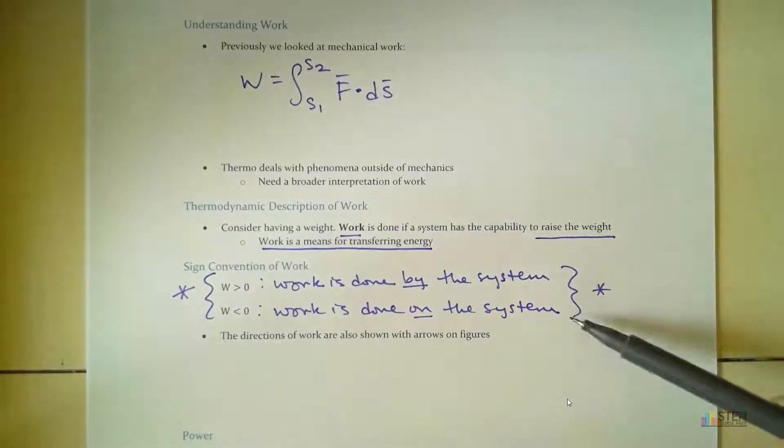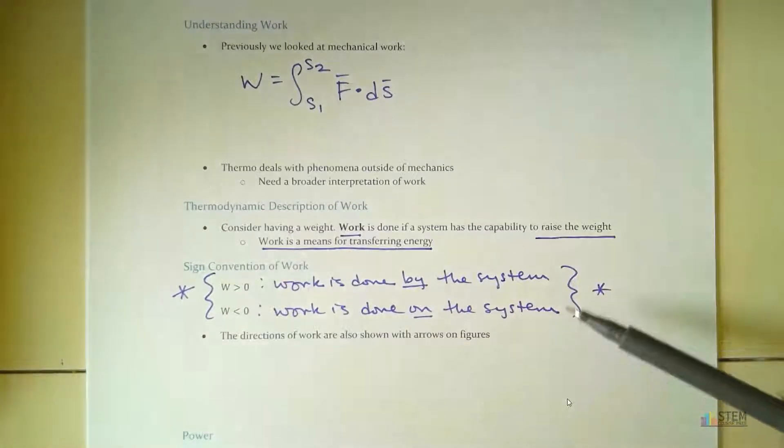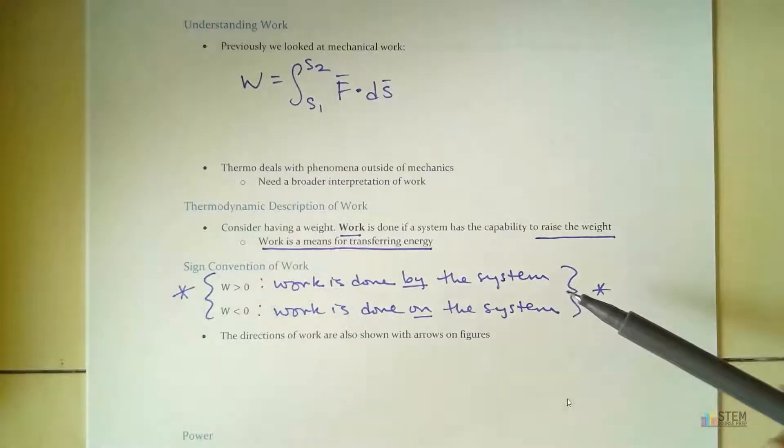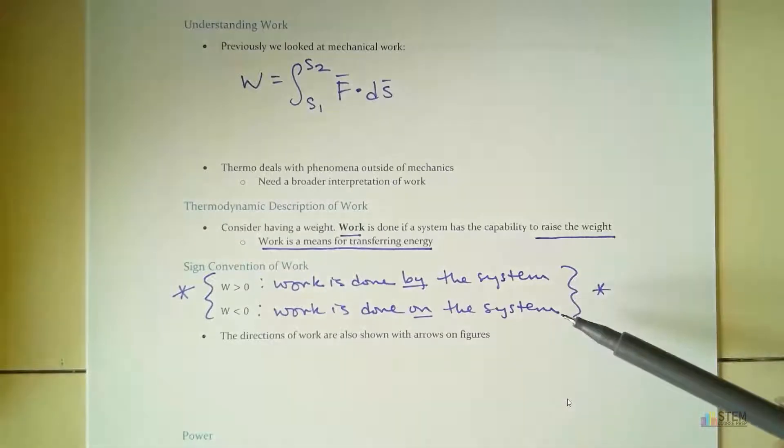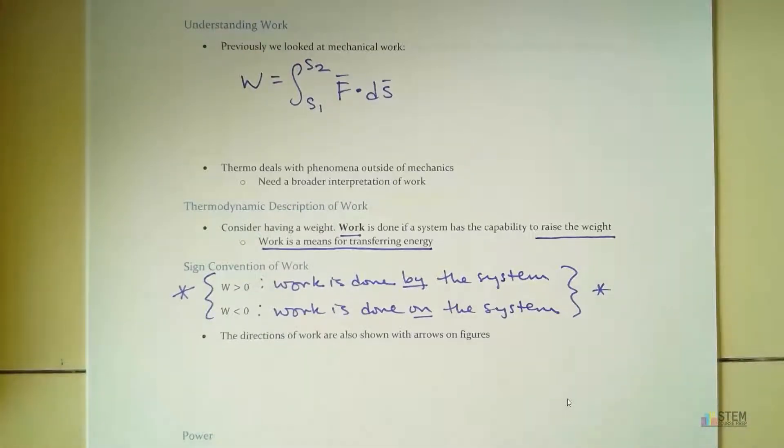Now, the difference between these two, let's think about the work being done on the system. When we say work is being done on the system, that's going to mean there's some sort of external energy that is being supplied to our system to make that work happen. And then when we say work is done by the system, that means the system itself can generate work. It doesn't need the external sources to generate the work. So I know it's kind of confusing when you first hear about it, but if you wait to get to the examples, it becomes a lot clearer.